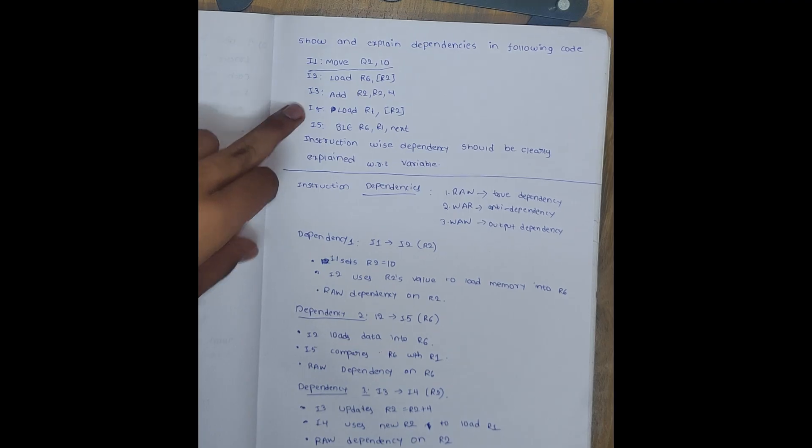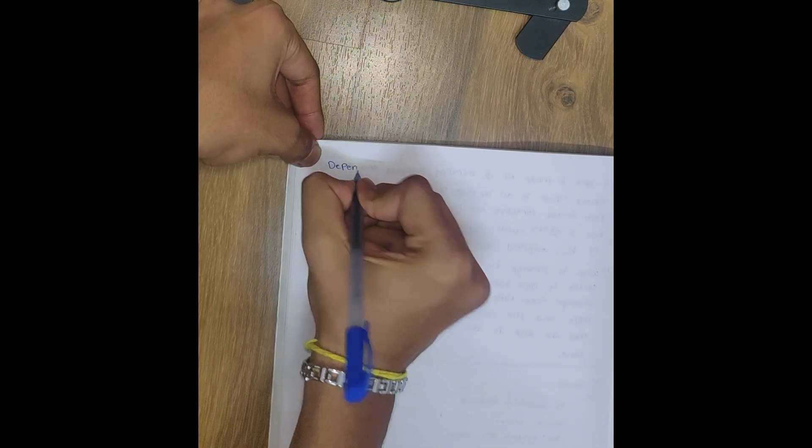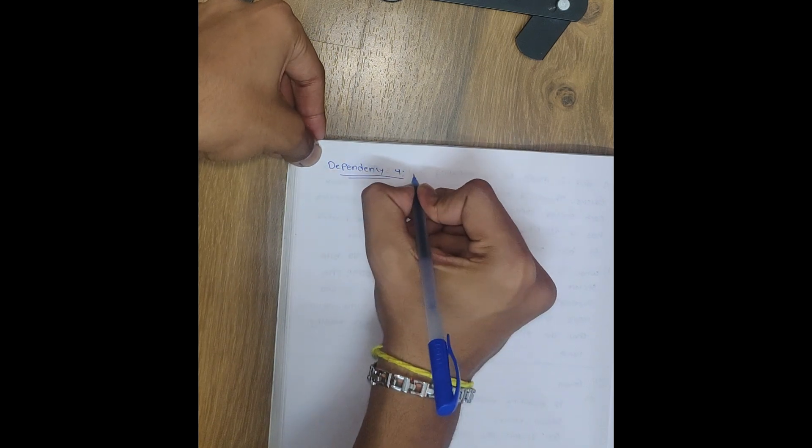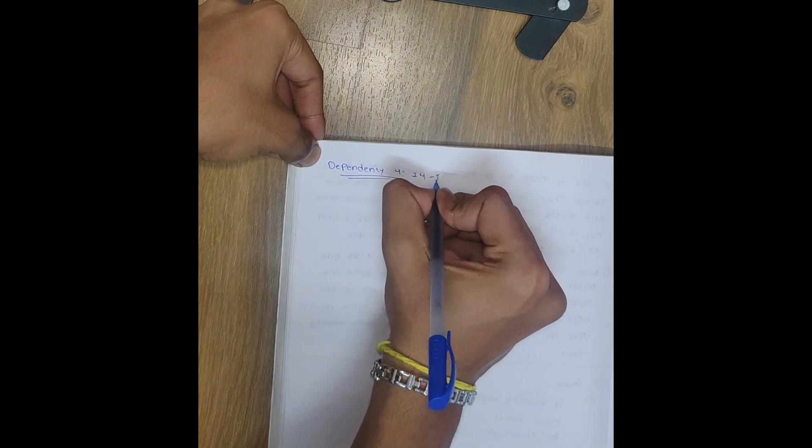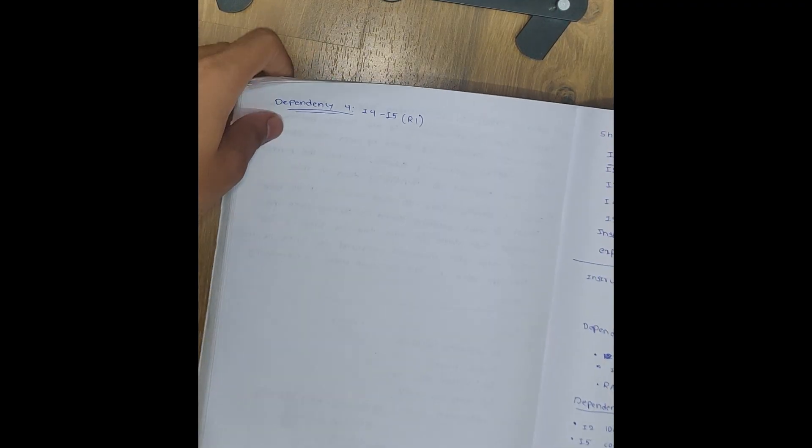Dependency 4 - that is from I4 to I5. That is for R1. If you can see the R1, so if you can see I4 to I5, what is happening? First I4 loads the data of R1, right?